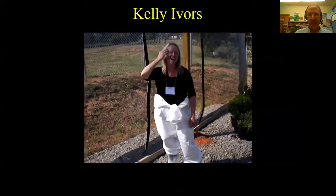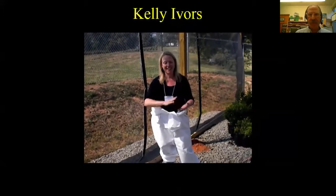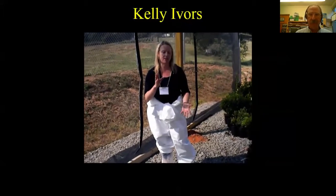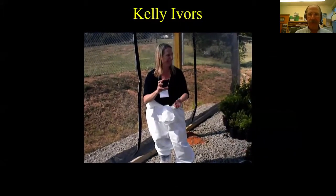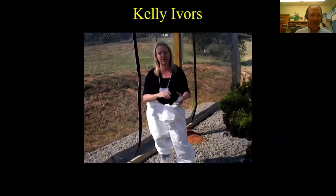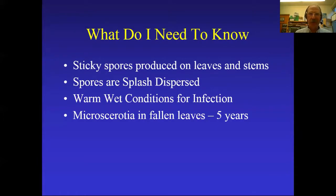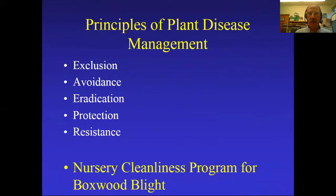The key things growers need to know about boxwood blight: microsclerotia formation, survivability in the landscape, rain events as dispersal triggers, and that it is not airborne. The top three management factors are fungicides, resistant cultivars, and cultural controls using sanitation. The five methods of plant disease management are exclusion, avoidance, eradication, protection, and resistance. Nurseries should also visit the Oregon Department of Agriculture's website for the Nursery Cleanliness Program for boxwood blight.